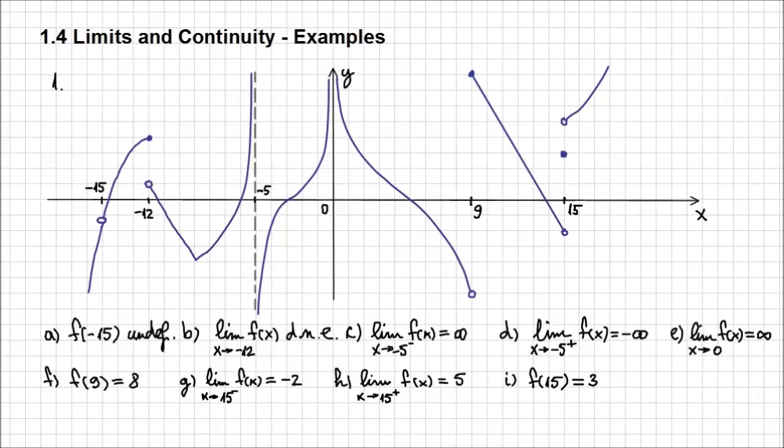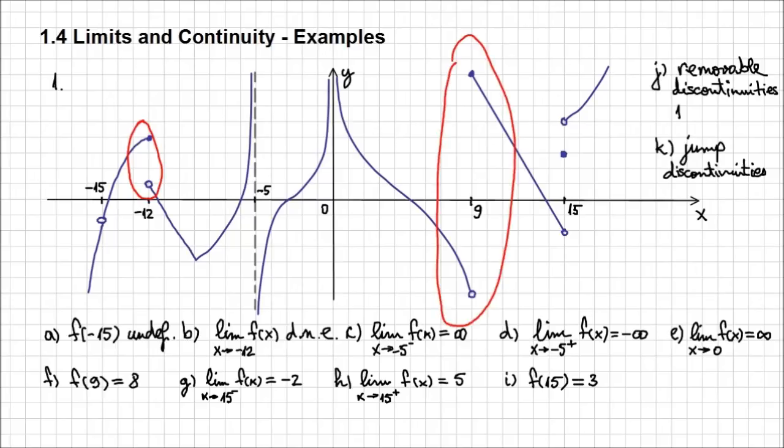It's very common that these problems involve other type of questions as well. They usually ask you the following thing. Point J, how many removable discontinuities can you count on this graph? Well, it's actually only one, because as we know, removable discontinuity we have where the function doesn't get a value. And that's only happening here at minus 15. Now, point K, how many jump discontinuities can we identify on this graph? Well, let's see again. I have one here at minus 12, I have another one at 9, and the last one at 15, when x is 15. So I have 3 jump discontinuities.